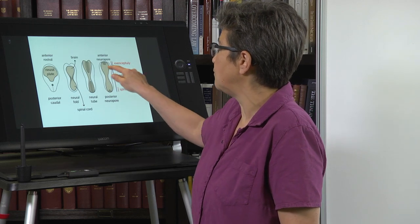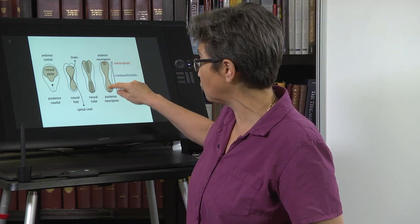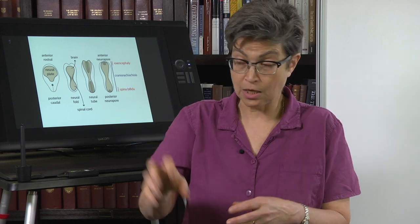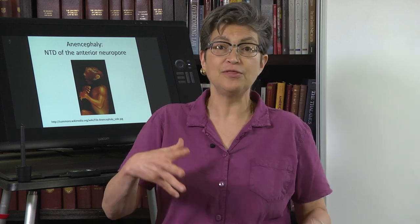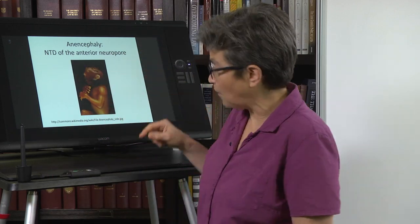Now, back to a failure of the anterior neuropore to close. That causes something called exencephaly. The anterior region is where the brain is going to develop, and if the front neuropore doesn't close, then the brain is externalized. Then during the post-neurulation process — which is eight out of the nine months of gestation — the milieu of the embryo eats at this brain and it essentially disintegrates. So that by the time the individual is born with exencephaly, there is no more brain left. They have what's called anencephaly — they don't have a brain — and this is the neural tube defect of the anterior neuropore.